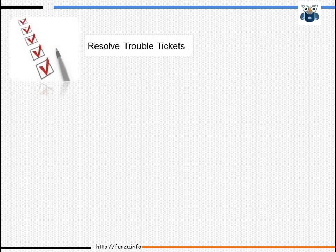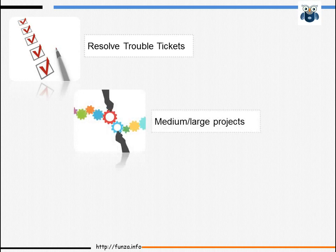Administrators are also the first point of contact when staff experience network or server problems. Thus a significant task is to resolve problem tickets on a priority basis. Apart from trouble tickets, a system administrator may be involved in a few medium to large projects.